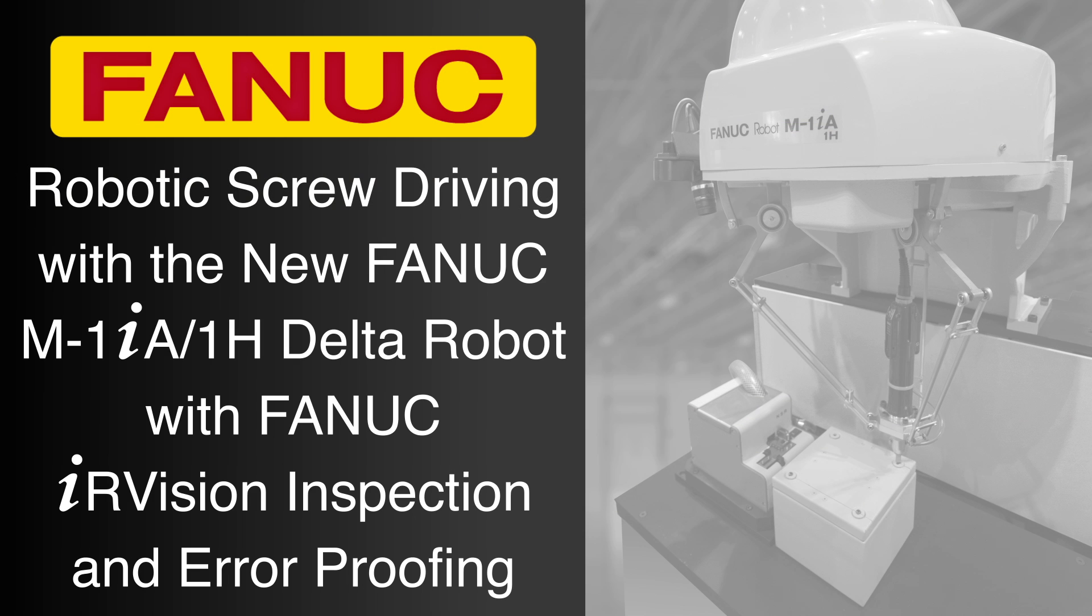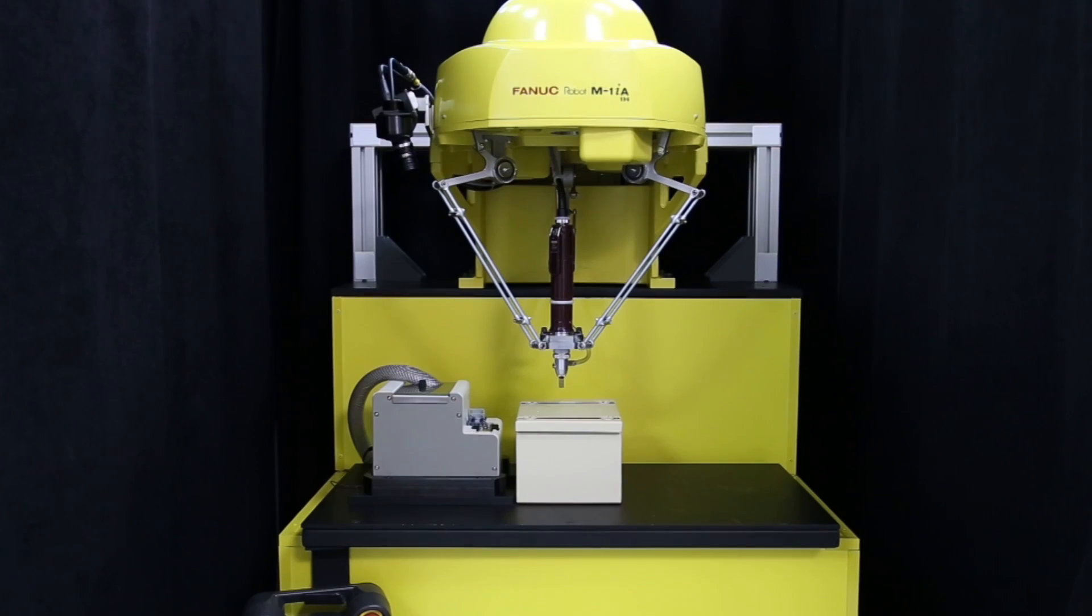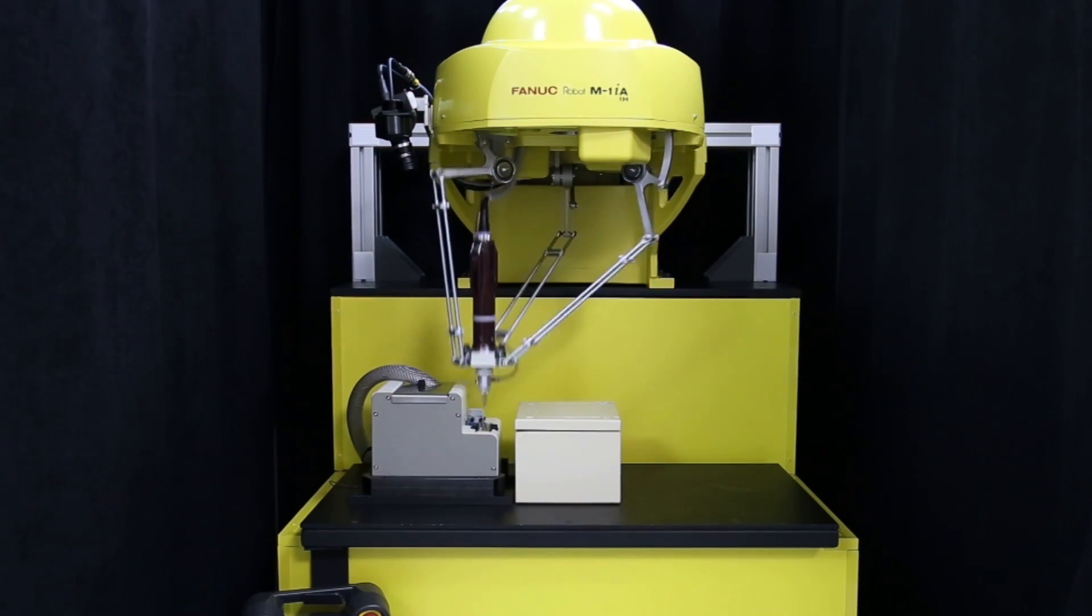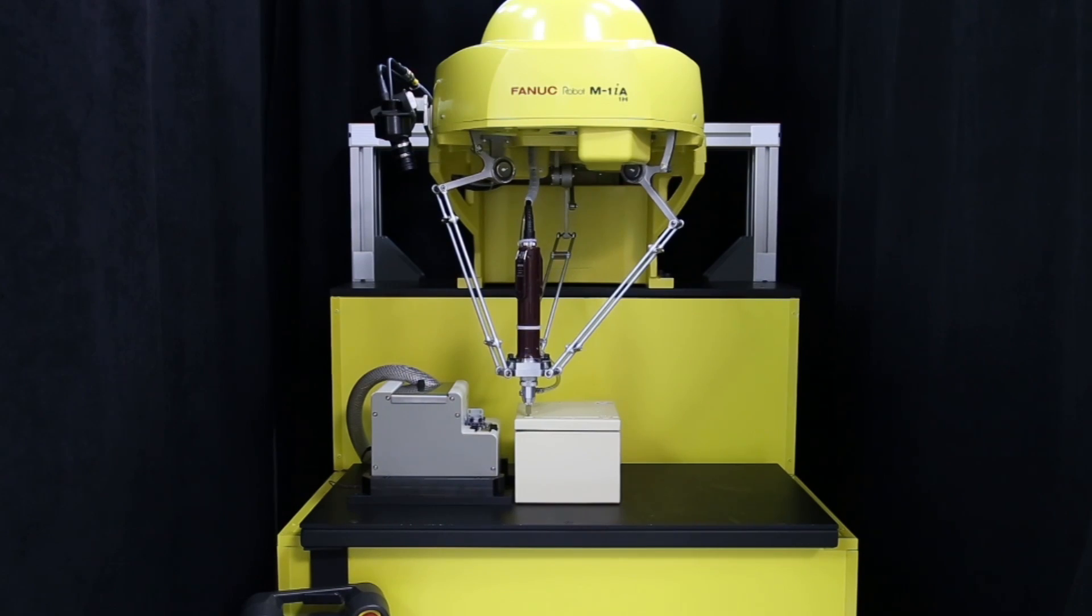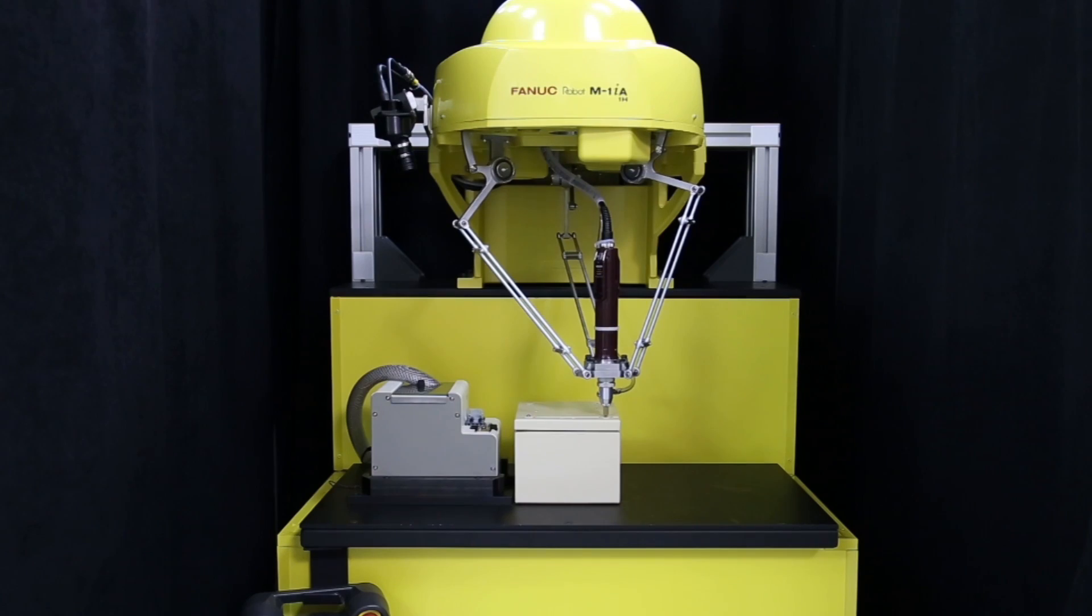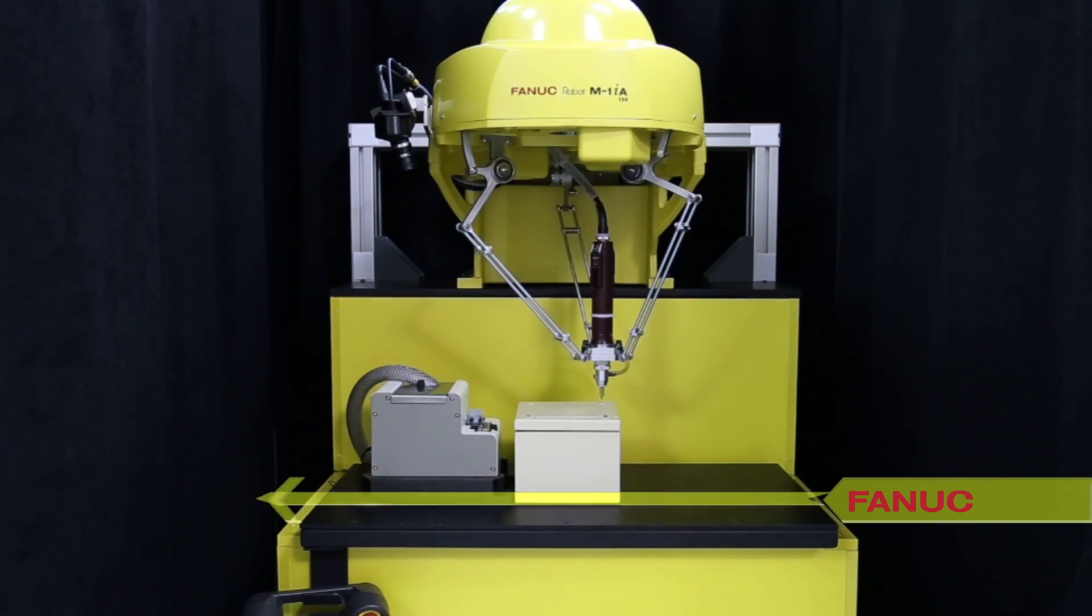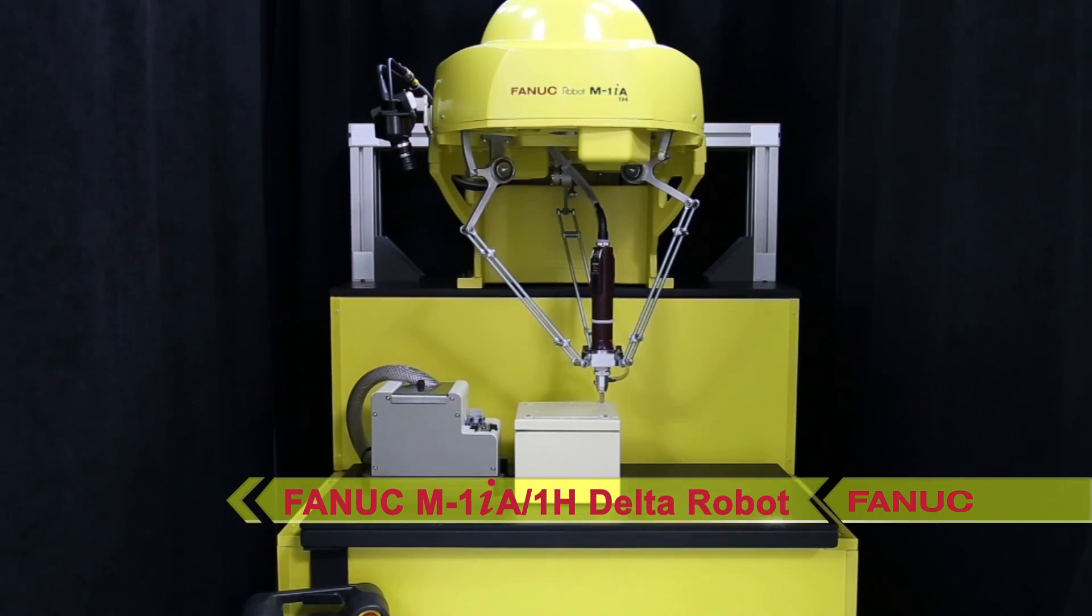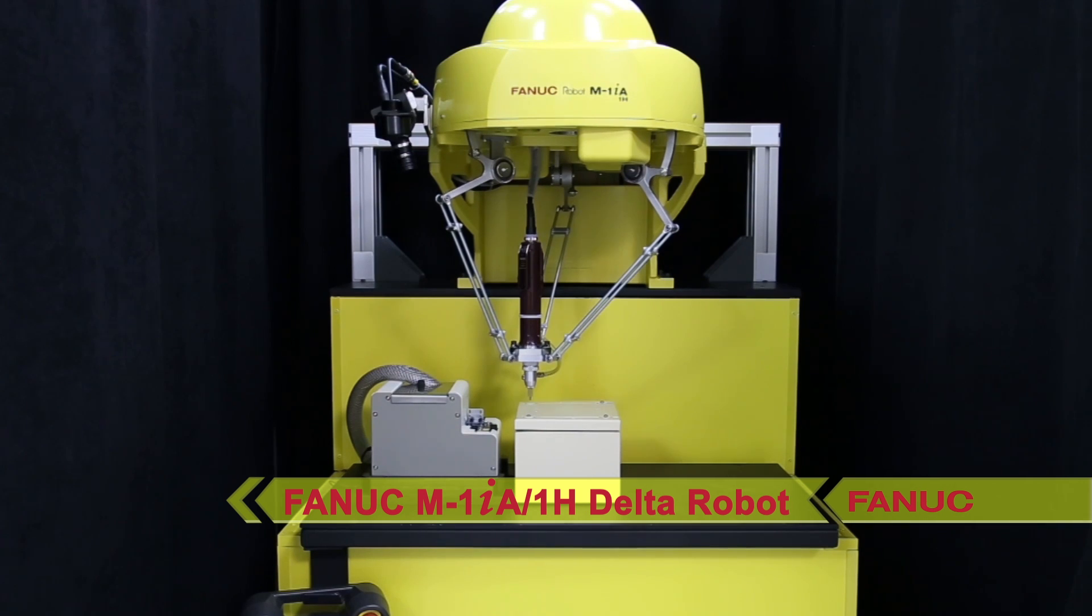Fanuc America's new M1iA-1H three-axis delta robot is an excellent solution for assembly applications that require compact workstations and an extremely fast and accurate robot where no wrist rotation is required. Screw driving is one such ideal application for the new Fanuc M1iA-1H delta robot.